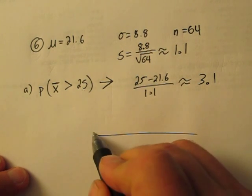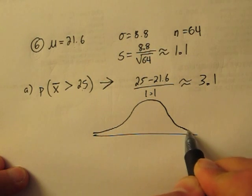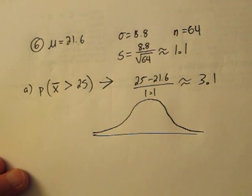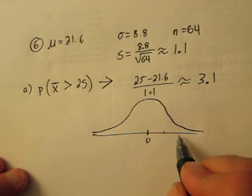A z-score of 3.1 or getting a z-score more extreme than 3.1 is not very likely. Here's a z-score of 0 right at the mean. Z-score 1, 2.